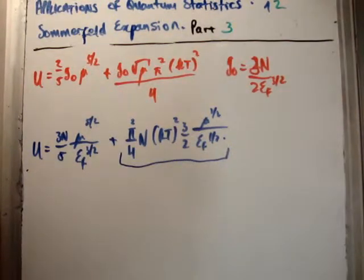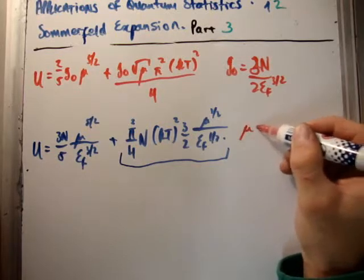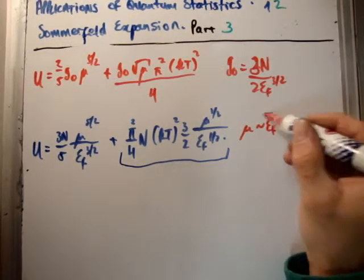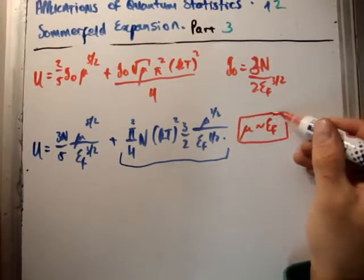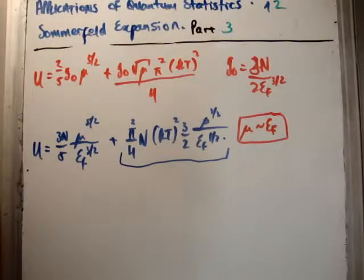So what we do is we assume that inside our correction term, the chemical potential is approximately the same as the Fermi energy. And to be honest, I've said in the past, in other videos, that up until 2000 Kelvin, the Fermi energy is pretty much the same as the chemical potential. And that's actually quite astonishing, if I'm honest. But that's the way it is. So in most cases, definitely for normal temperatures, you can always solve the Fermi energy for the chemical potential. And that's what we do.